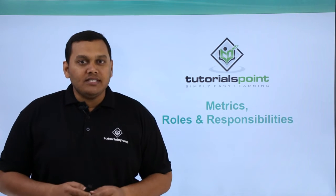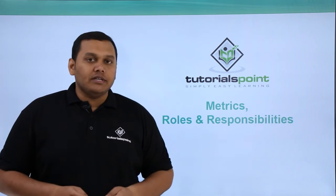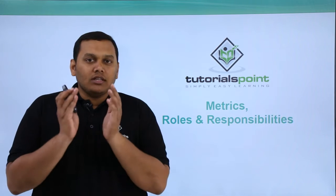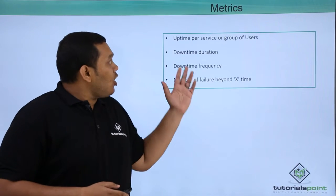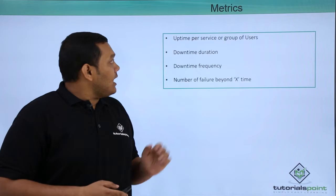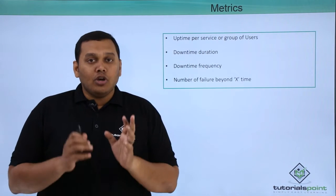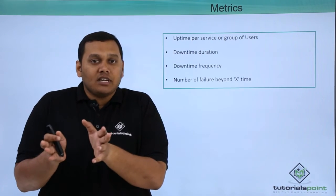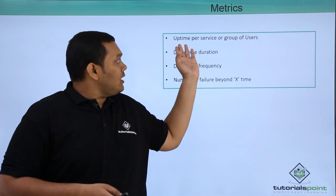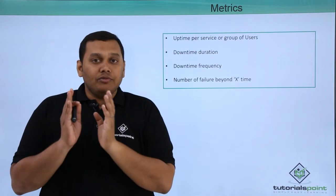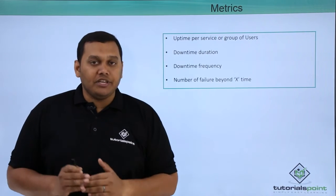In this video, we are going to discuss metrics, roles, and responsibilities. What are the common metrics we look at in availability management? The first metric is uptime per service or group of users — how long services are available for a group of users or a specific service is taken into consideration here.